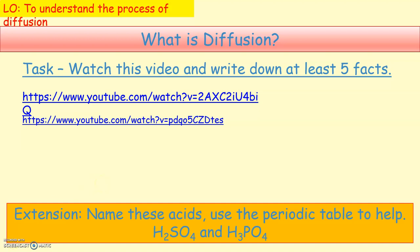From the video you should have written that diffusion is the movement of substances from an area of high concentration to an area of low concentration. Diffusion happens in liquids and gases because the particles move randomly from place to place. Diffusion is an important process for living things because it is how substances move in and out of cells.